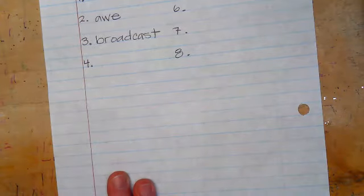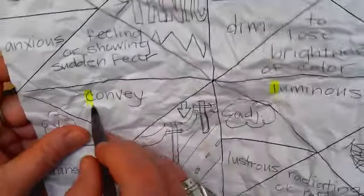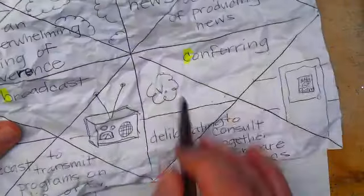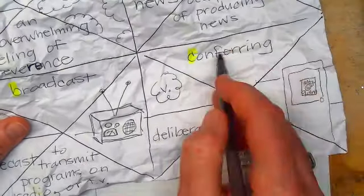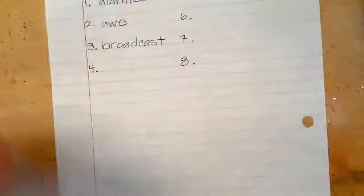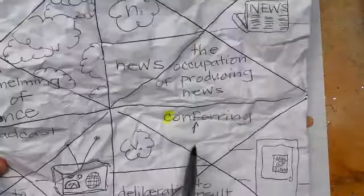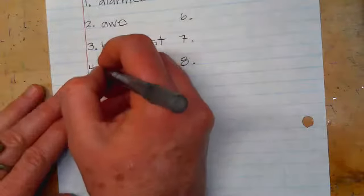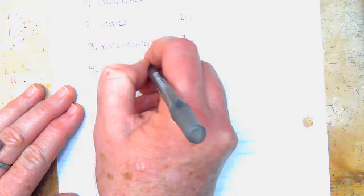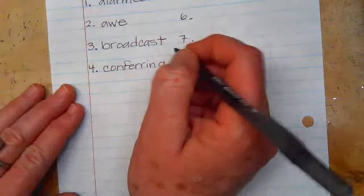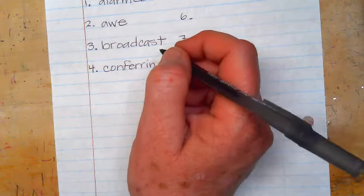Then I have conferring and convey. So C-O-N versus C-O-N. So I have to look at the fourth letter, F, V. And F comes before V, so I'm going to do conferring. And then I'm going to do convey.